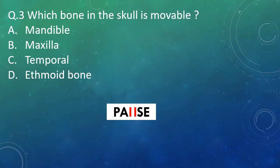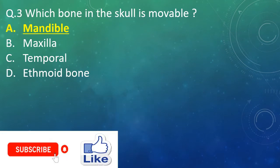Question 3: Which bone in the skull is movable? Option A: mandible. Option B: maxilla. Option C: temporal. Option D: ethmoid bone. And the right answer is Option A — mandible.